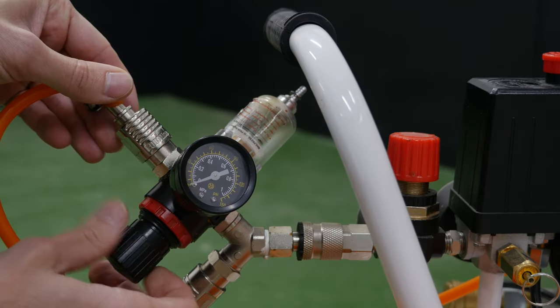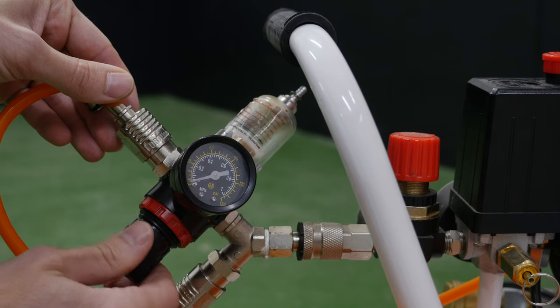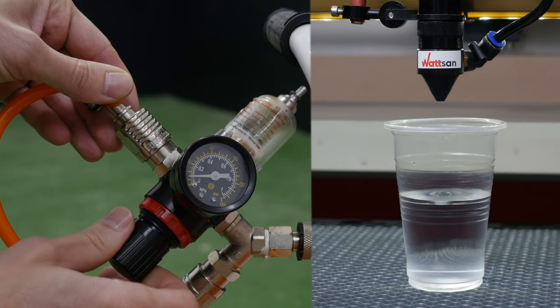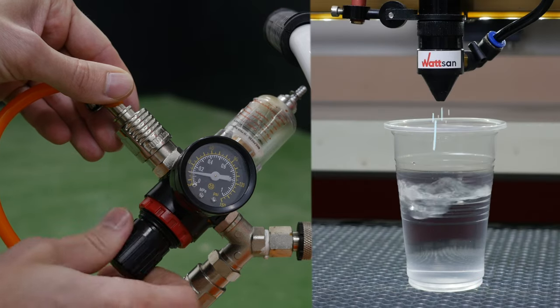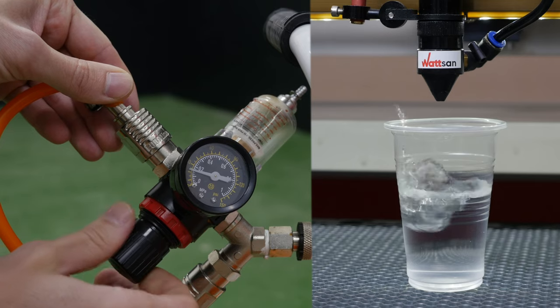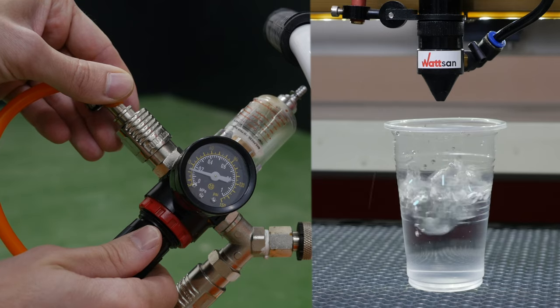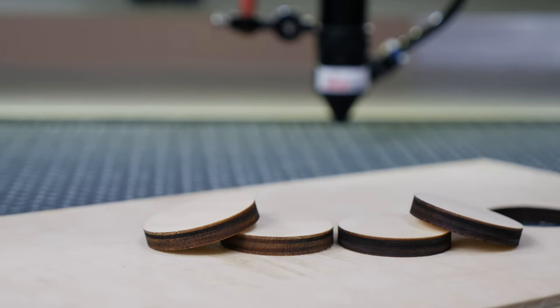Without an air compressor, the combustion products get on the lens and accumulate on it. The laser beam heats up the dirt and dust on the lens, and the lens fails sooner. It overheats and breaks.